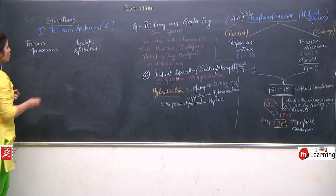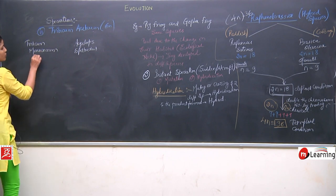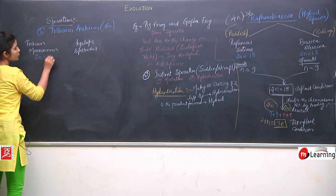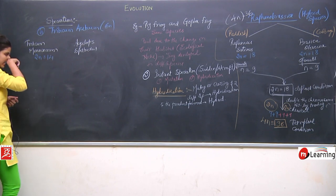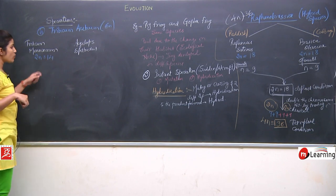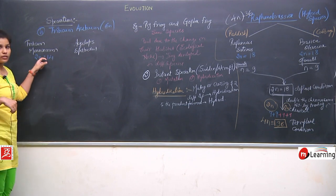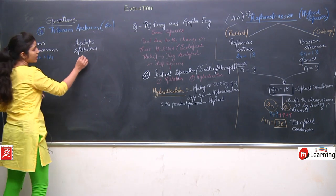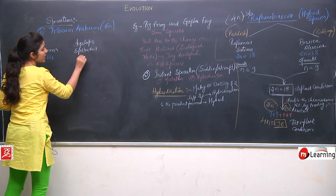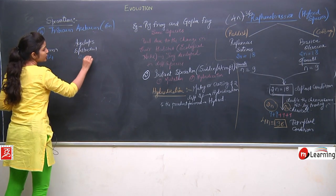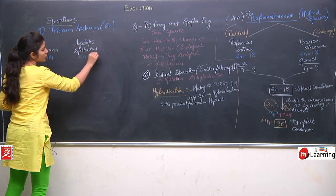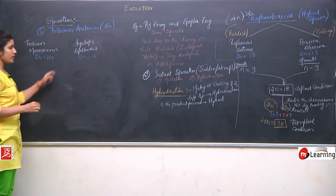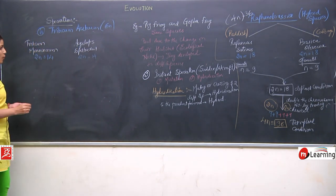Triticum monococcum was having 2n equals to 14, it was in the diploid condition, having chromosome number 14. And the same in Aegilops speltoides also — 2n equals to 14.